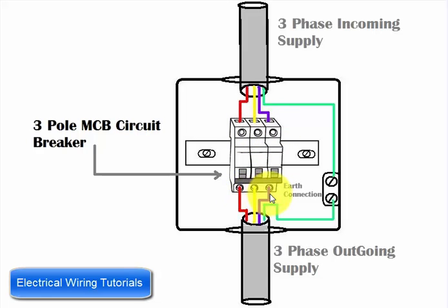Here I've shown a metal box in which the three-pole MCB circuit breaker is installed. I've shown the three-phase incoming supply with red, yellow, and blue wires, and green as the ground or earth wire.